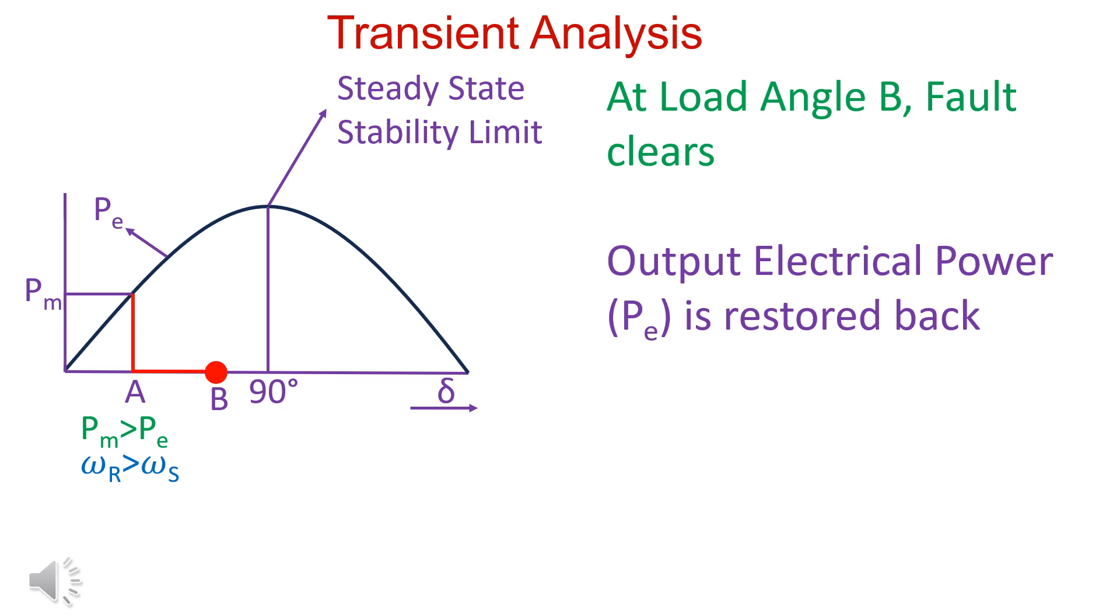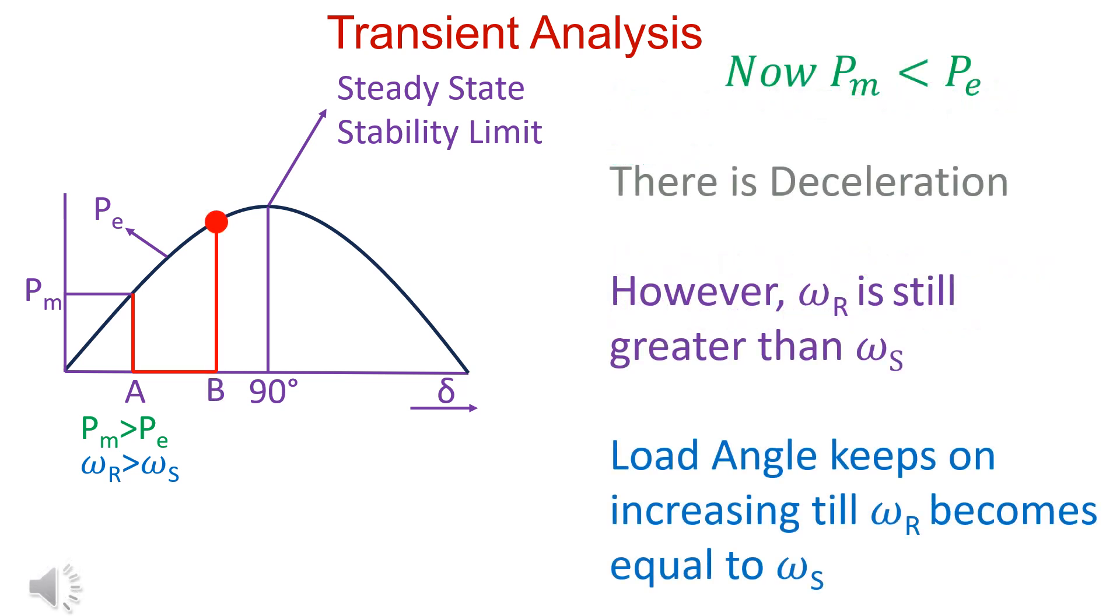Fault clears at load angle B. Output electrical power PE is restored back. PM has become less than PE. There is deceleration. Omega R starts decreasing. However, Omega R is still greater than Omega S. Load angle keeps on increasing till Omega R becomes equal to Omega S.